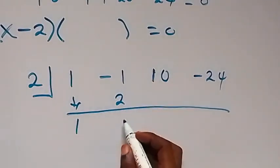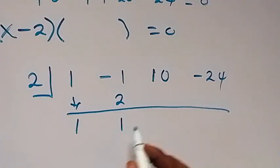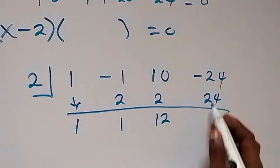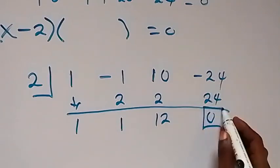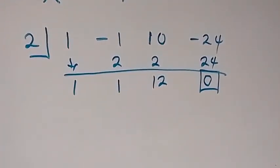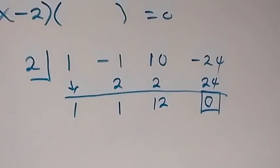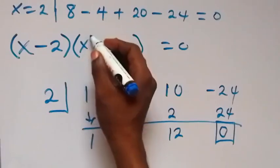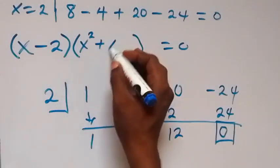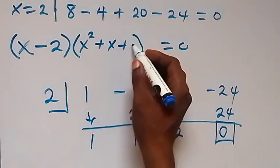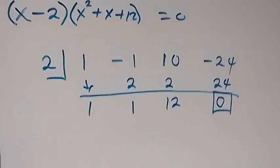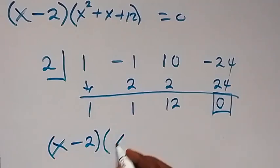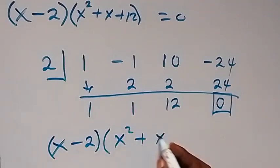For the synthetic division we drop 1, then 2 times 1 gives us 2, we write 2 here, add to get 1, then 2 times 1 is 2, then add to get 12, then 2 times 12 is 24, and adding gives 0. This confirms 2 is the root. The remaining quadratic factor has coefficients giving us x squared plus x plus 12.